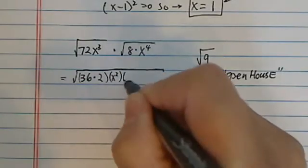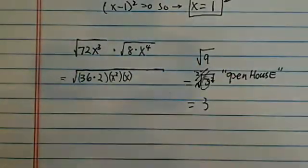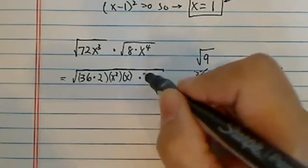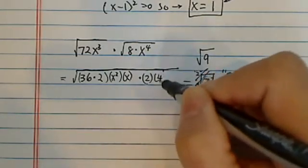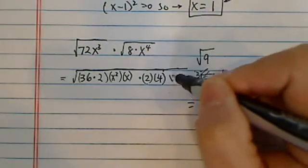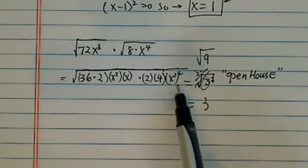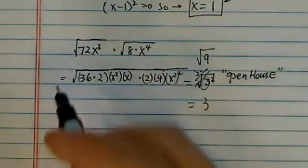X squared times X, that's another squared term in there. Times 8. 8 is 2 times 4. 4 is a happy number because it's a complete square. And X to the 4th is really X squared squared again.